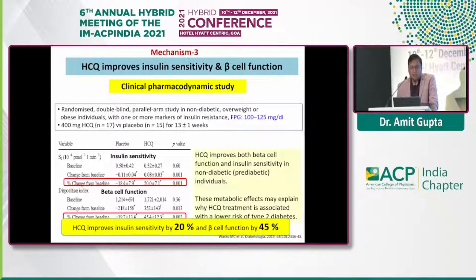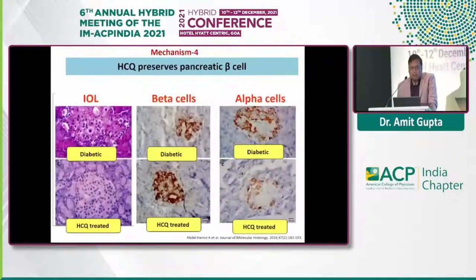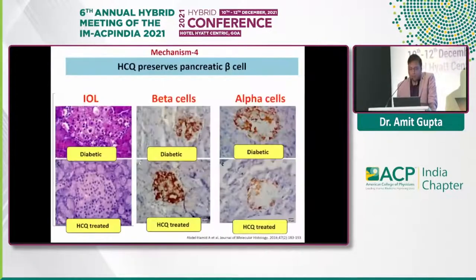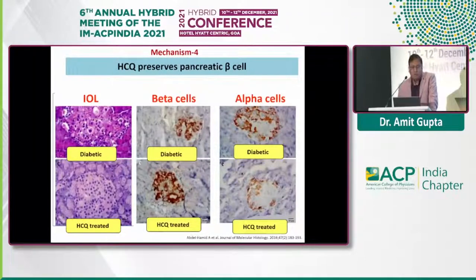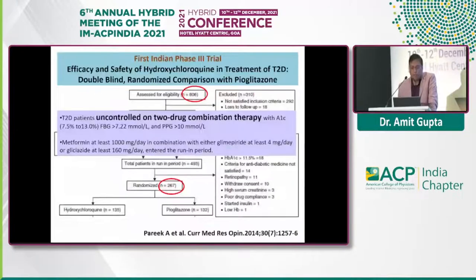HCQ also improves insulin sensitivity and beta cell function — insulin sensitivity is improved by 20 percent and beta cell function by up to 45 percent. HCQ also preserves pancreatic beta cells; on the islets of Langerhans, HCQ-treated patients show less inflammation in beta cells compared to untreated diabetic patients.